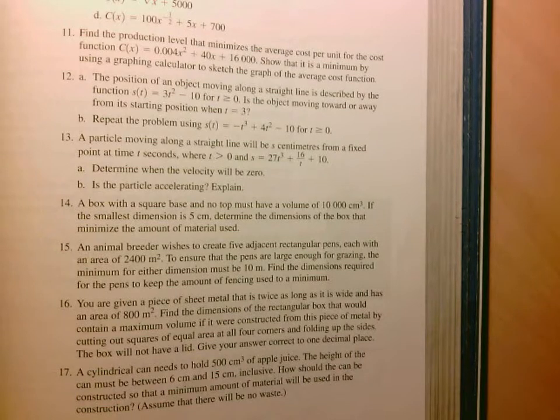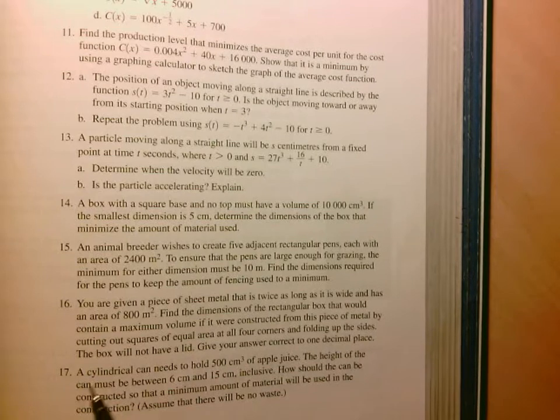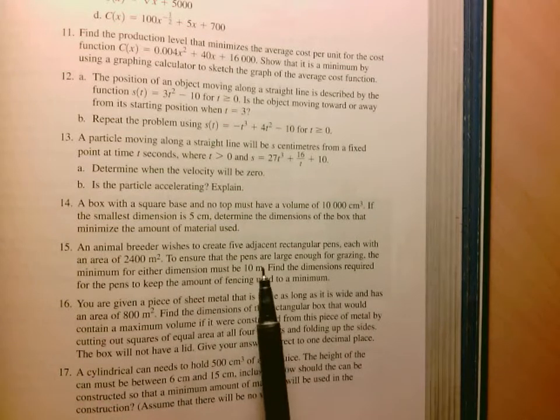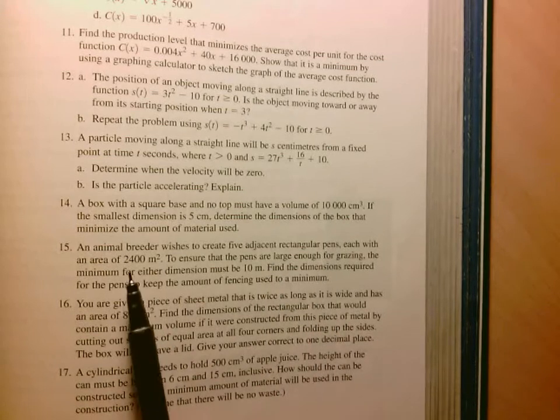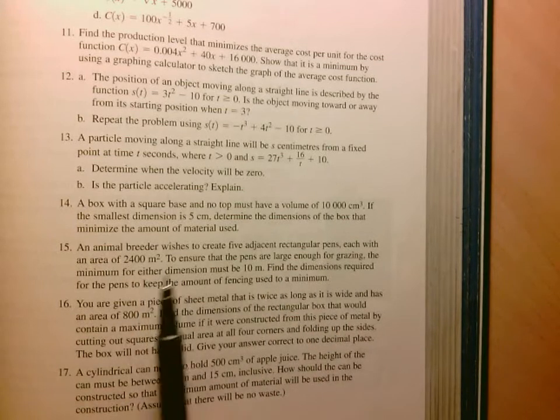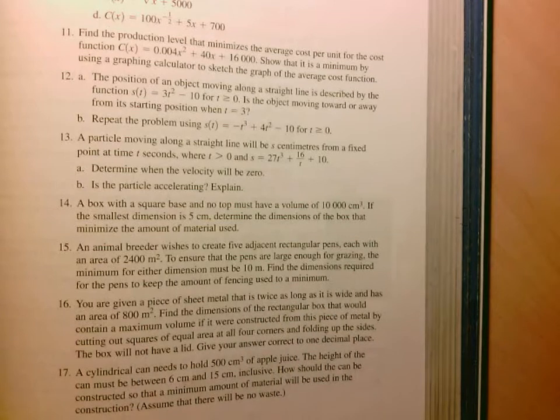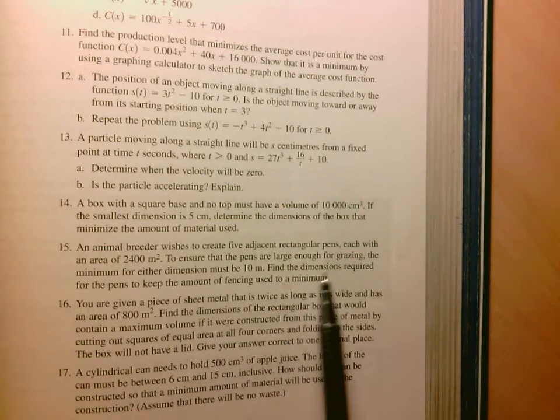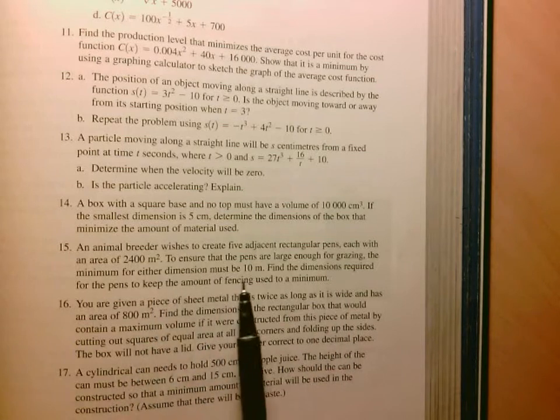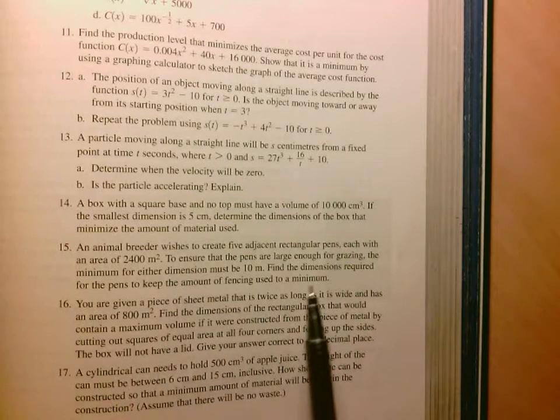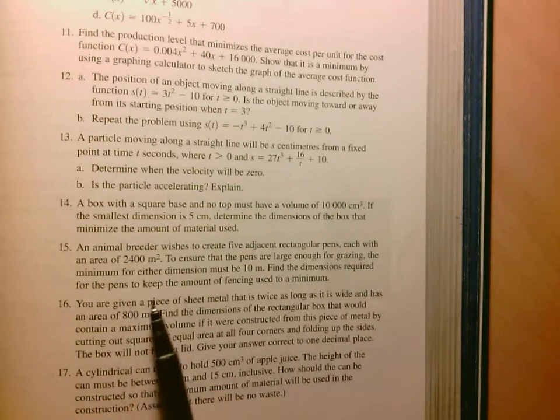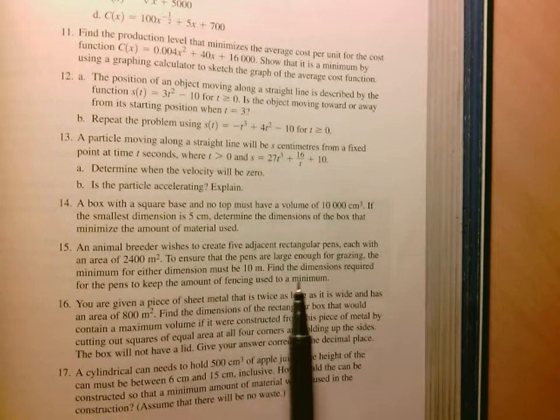Hi folks, we're going to take a look at page 157, number 15 from the unit 4 assignment. So let's take a look at the question. It says an animal breeder wishes to create five adjacent rectangular pens, each with an area of 2400 meters squared. So we're putting five pens, one next to the other, and each single one is 2400 meters squared. And to ensure that the pens are large enough for grazing, the minimum of either dimension must be 10 meters. So keep that in mind as we're doing the problem, and find the dimensions required for the pens to keep the amount of fencing used to a minimum.